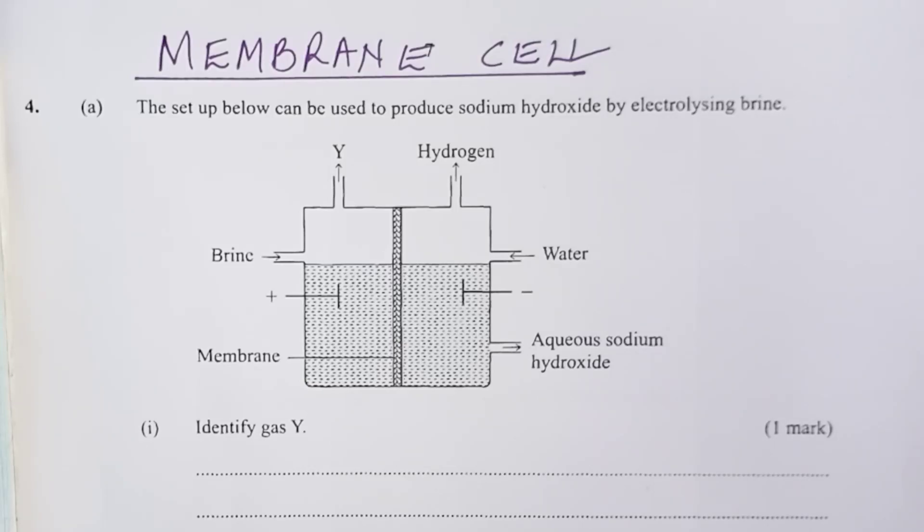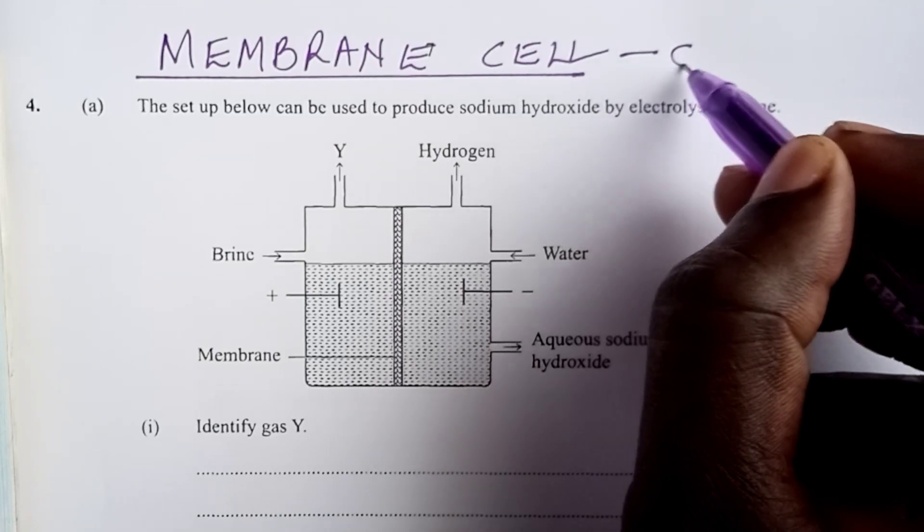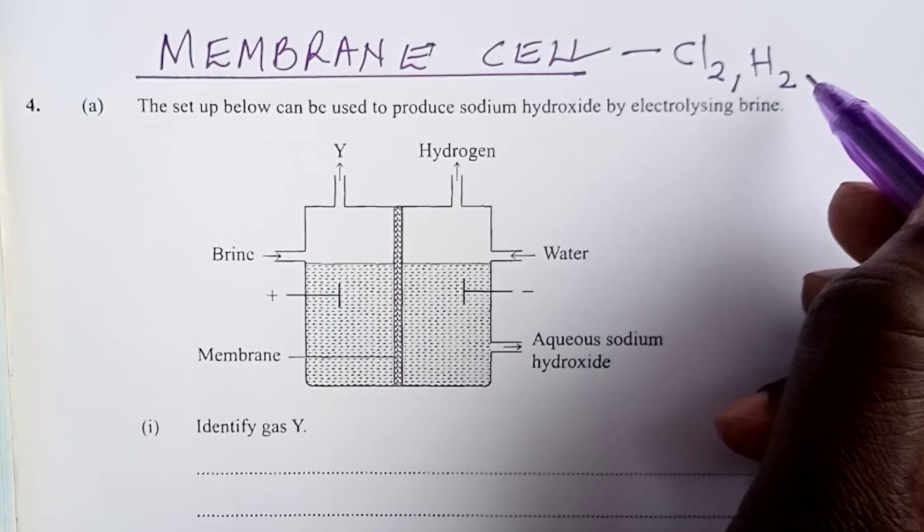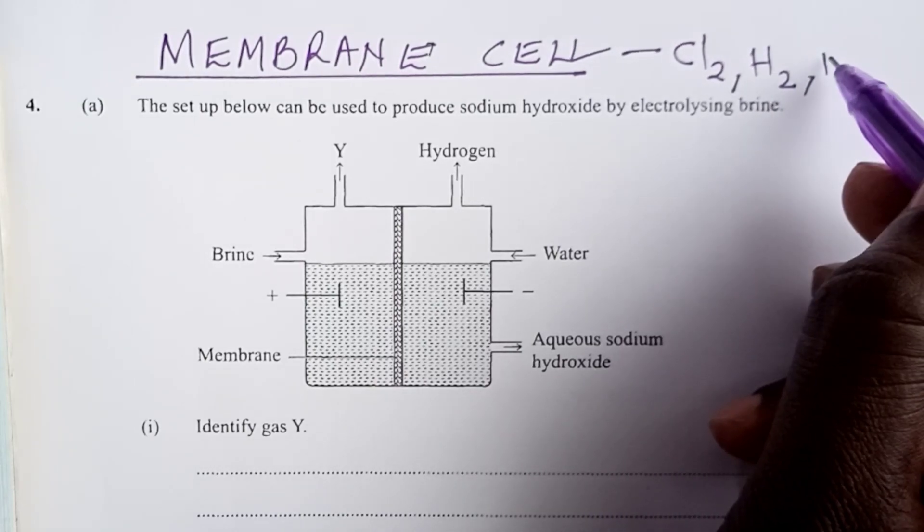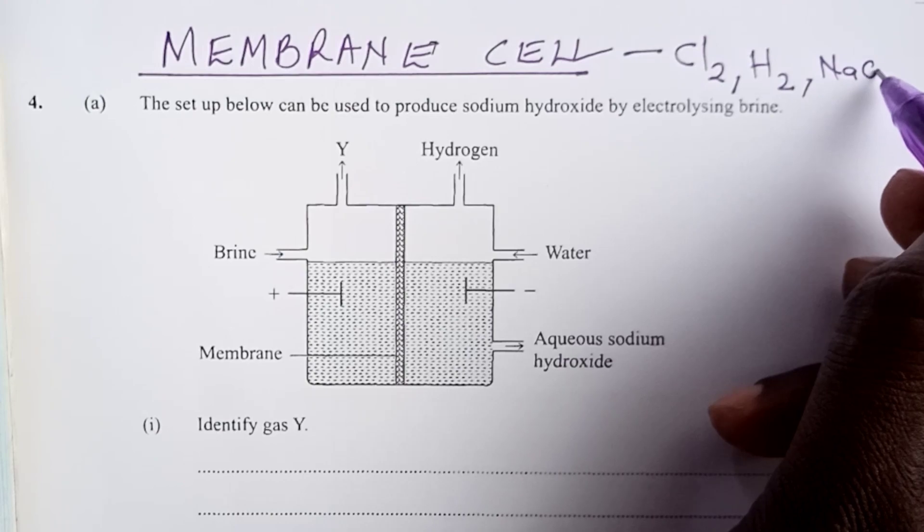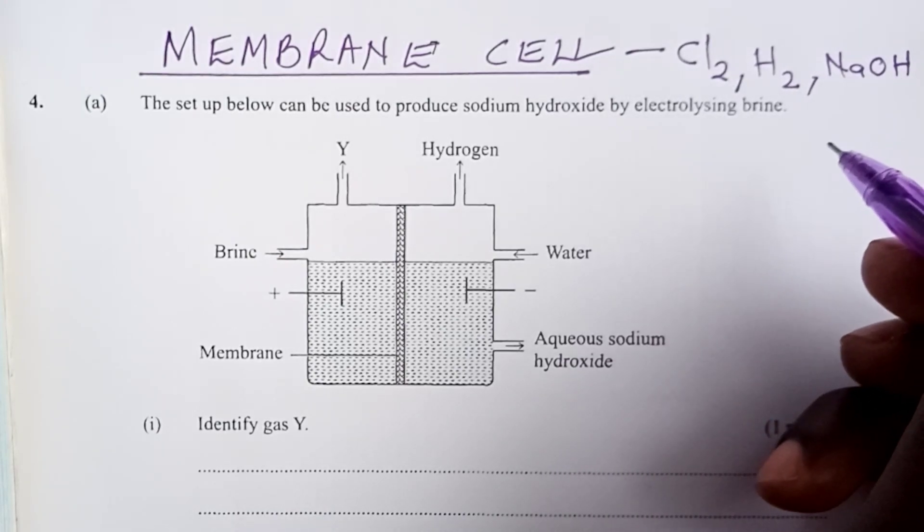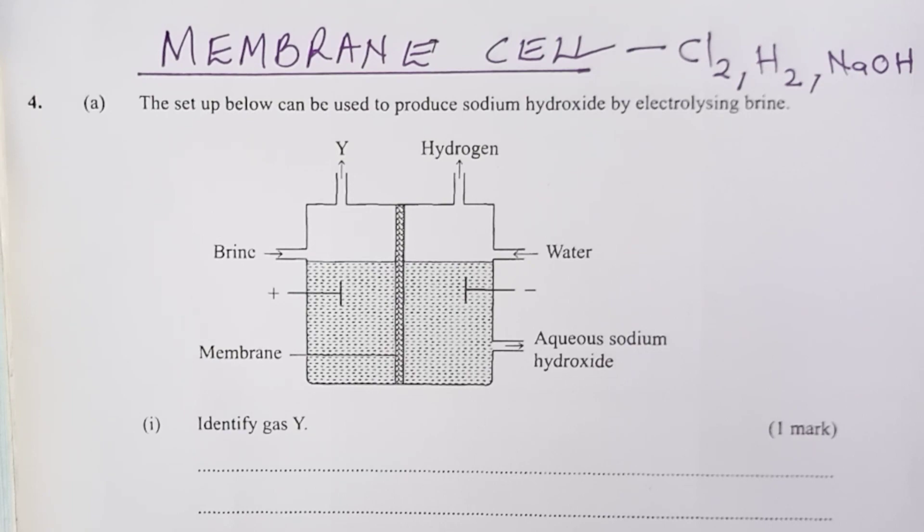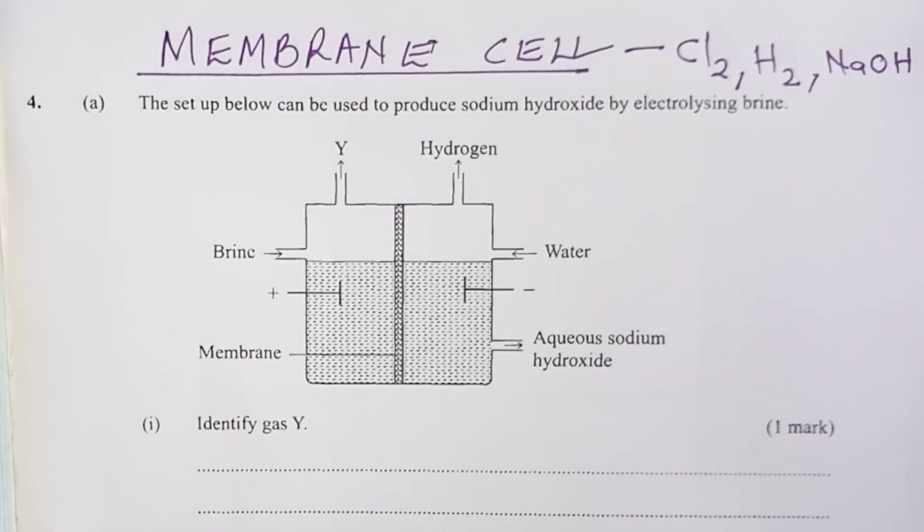Greetings, we present the membrane cell. Membrane cell produces chlorine gas, hydrogen gas, and sodium hydroxide. These three are very important substances used in industry to make several types of very essential products useful to humanity.